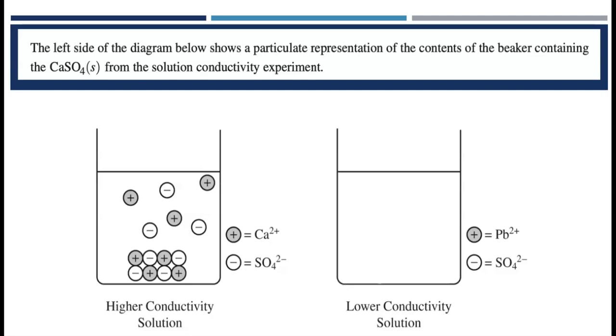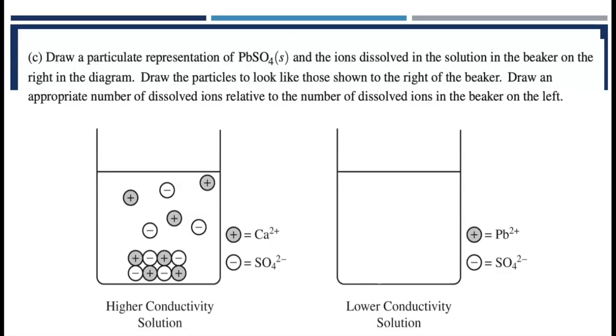The left side of the diagram below shows a particle level representation of the contents of the beaker from the calcium sulfate that we did in Part B. The question asks, draw a particulate representation of the lead-tooth sulfate beaker and the ions dissolved in solution in the right-hand diagram. Draw the particles to look like those shown to the right of the beaker. Draw an appropriate number of dissolved ions relative to the number of dissolved ions in the beaker on the left, which of course was the calcium sulfate.